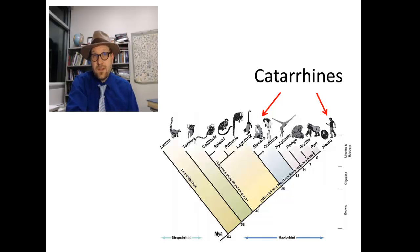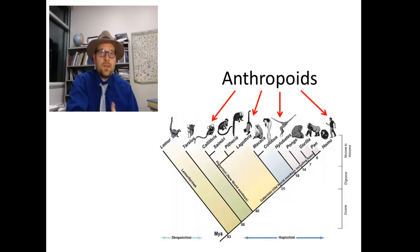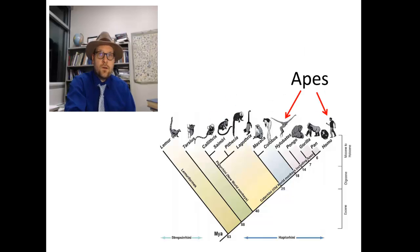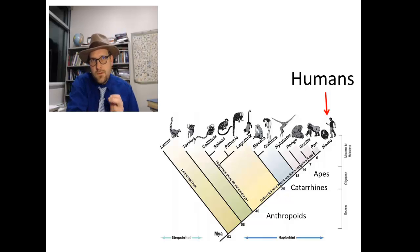Together the Platyrines and Catyrines are placed within the Anthropoids, a group we commonly call the monkeys, although within the Catyrines are the apes, which differ from other Anthropoids in lacking a tail. We as humans fall into the Catyrine clade, or branch of primates, and more specifically within apes, with gibbons, gorillas, and chimps.